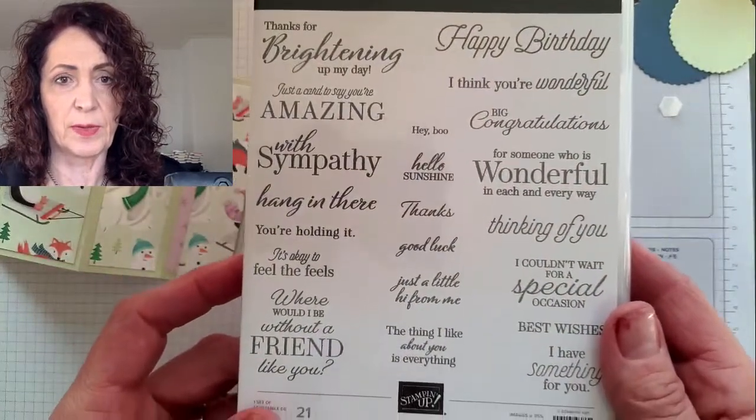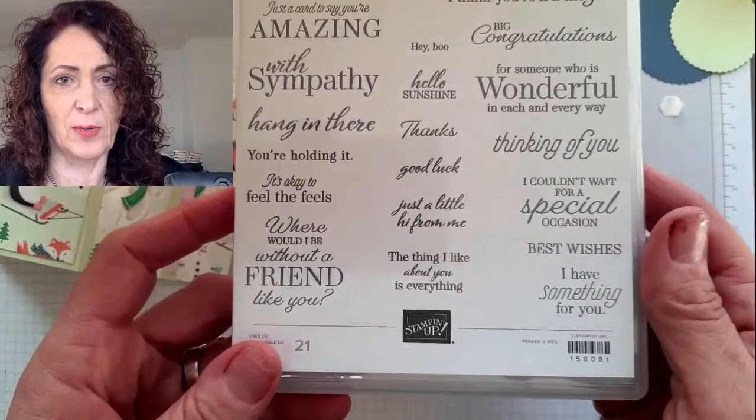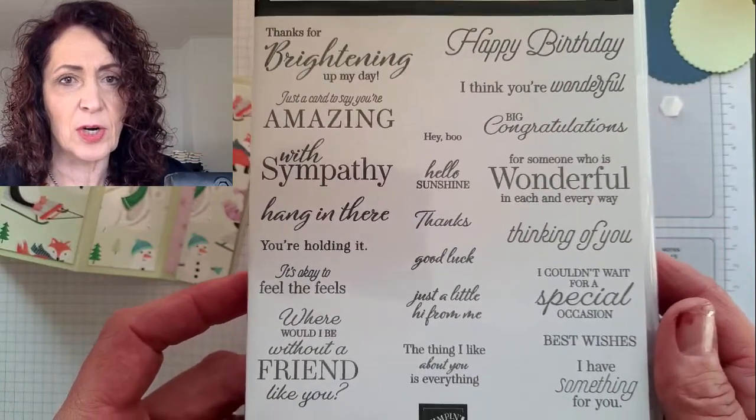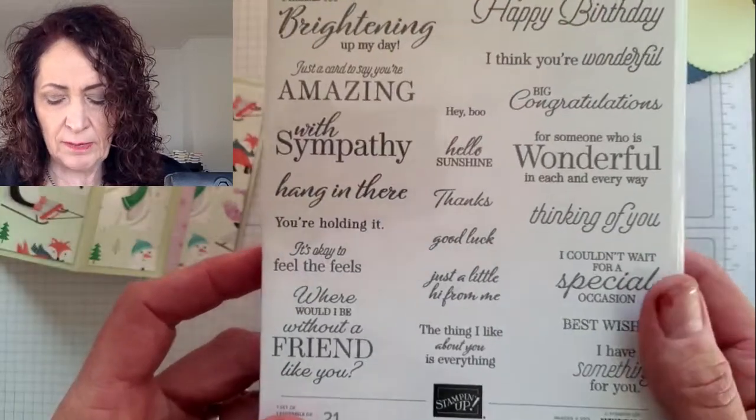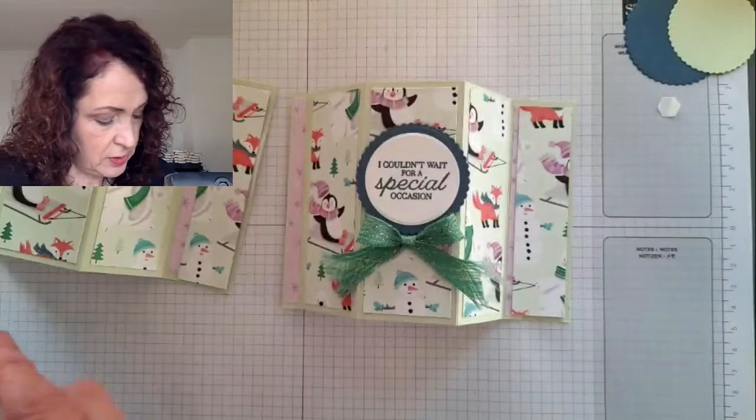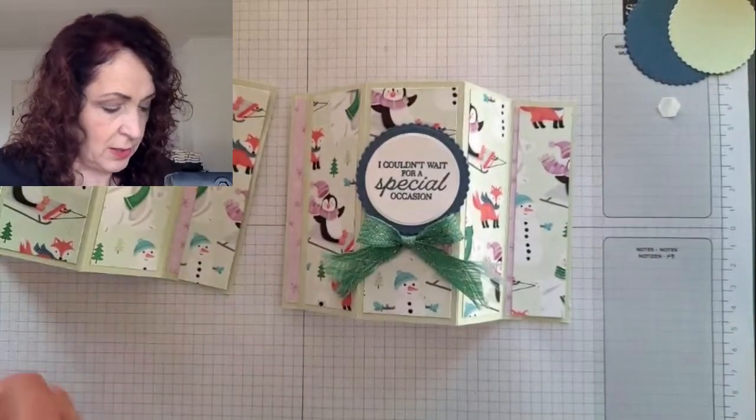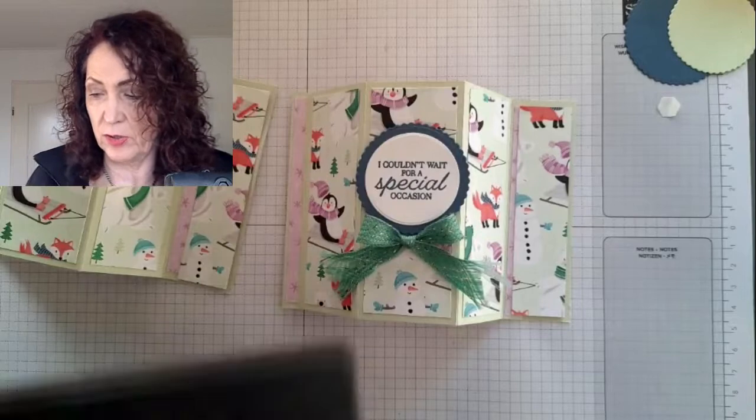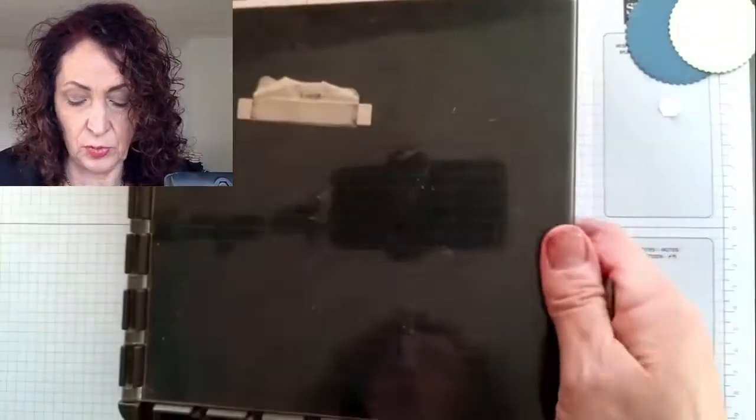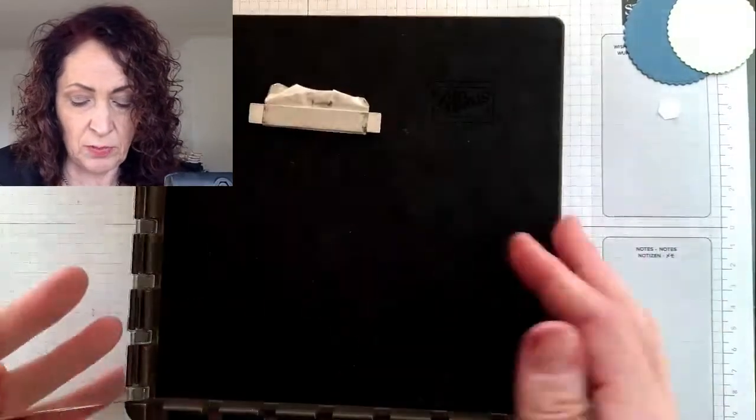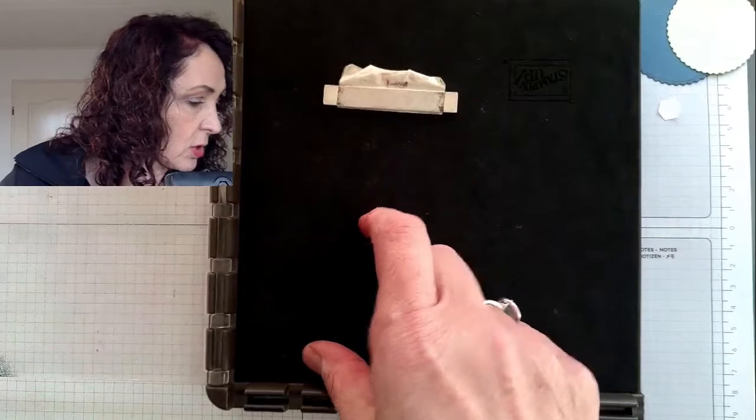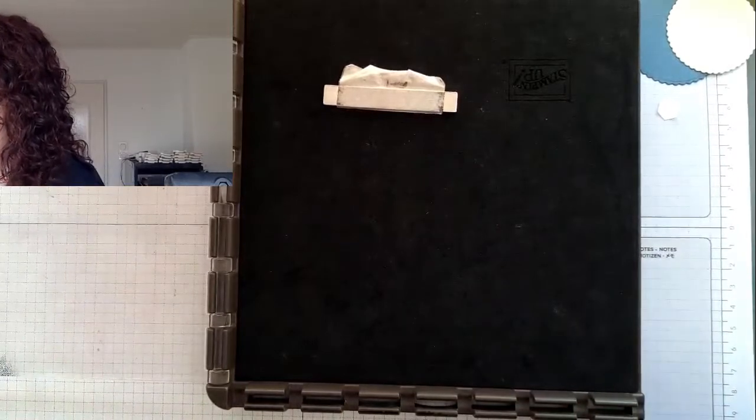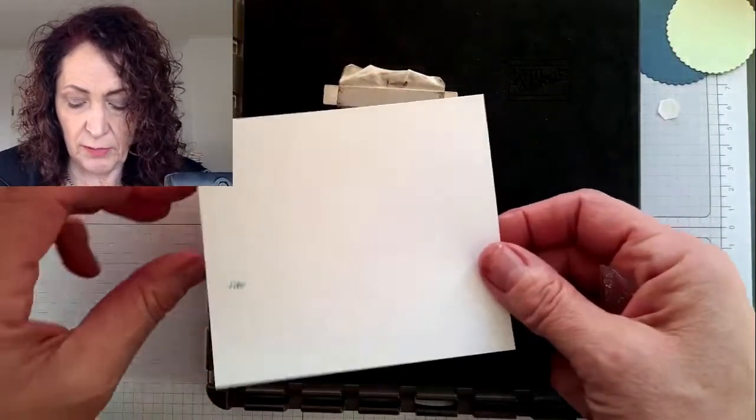Where would I be without a friend like you? I kind of like that too. Thanks for brightening up my day. Just a card to say you're amazing. Hang in there. Lots of different choices. Maybe I'll do the same thing that I did already. So I've got the saying and I'm going to use this gadget called the Stamparatus. It is a stamp positioning tool. So it has a clear hinged plate. And now I need to find my piece of white cardstock. I had an extra piece of white which has seemingly disappeared. I found it here.